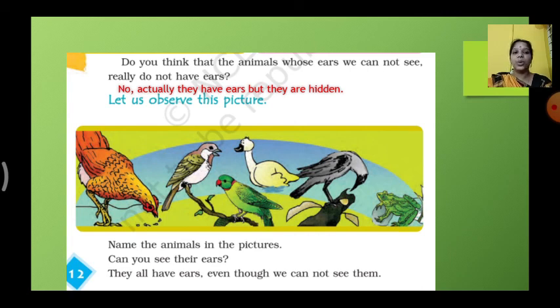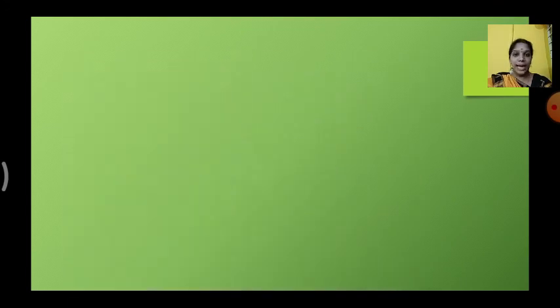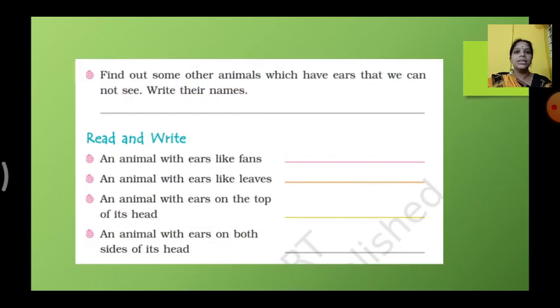They all have ears even though we cannot see them. Okay children, in this picture what are the animals? Write their names. Okay, write it in your classwork. Next, find out some other animals which have ears that we cannot see. Write their names. This also you have to write it in your classwork by your own.